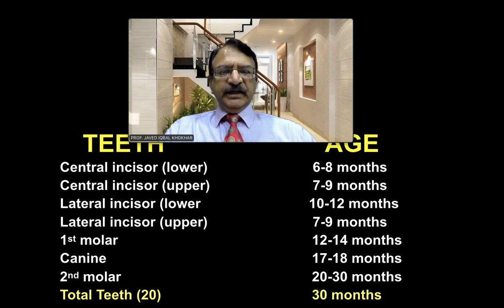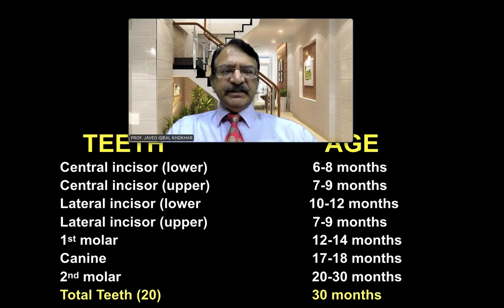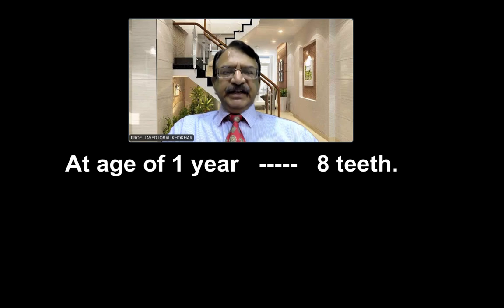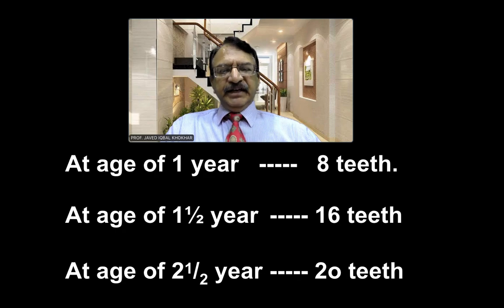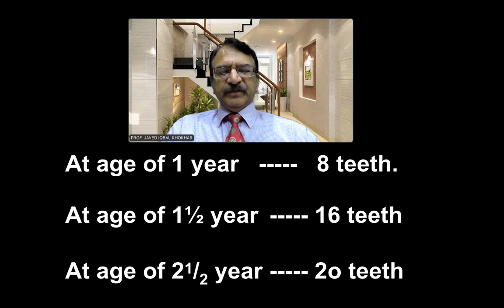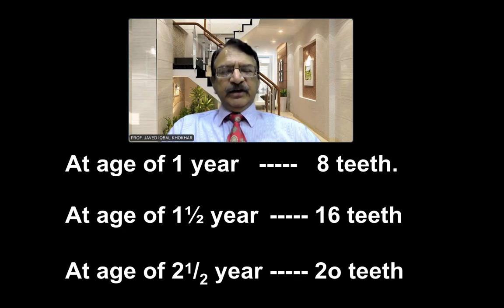Total temporary teeth are 20 in number, and by the 30th month — approximately 2 and a half years — their eruption is completed. At the age of 1 year, there are 8 teeth. At the age of 1 and a half years, there are 16 teeth. And by the age of 2 and a half years, there are a complete 20 milk teeth.